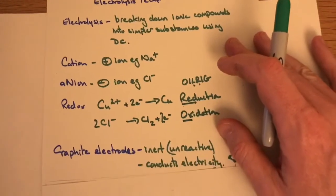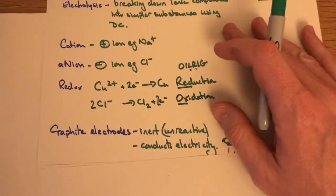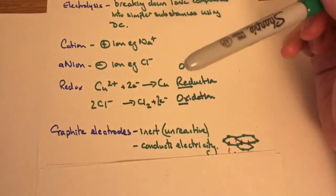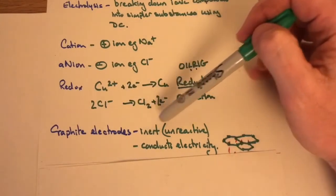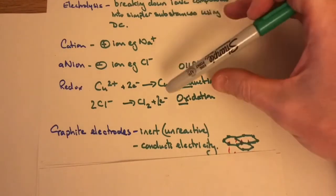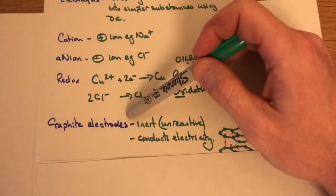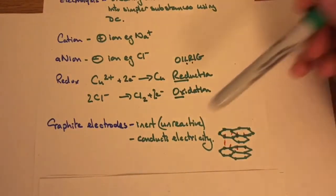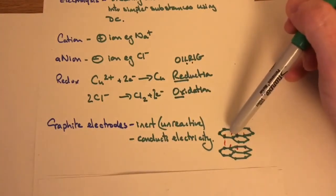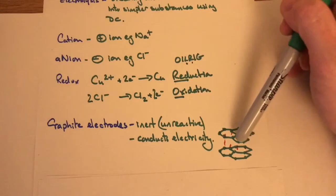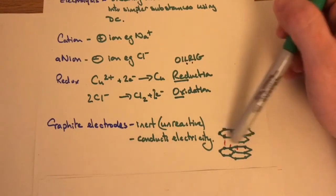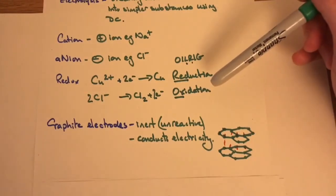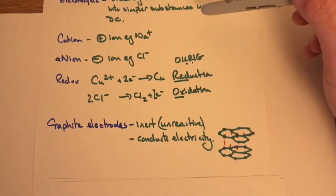The final bit to remember is about graphite electrodes used in electrolysis. There are two reasons we use graphite: first, graphite is inert — it's unreactive, so it won't take part in the chemical reaction. Second, graphite conducts electricity. Carbon normally bonds with four bonds, but in graphite it bonds with three, giving it a delocalized electron that can move through the structure and conduct electricity. It's a great material for electrodes.